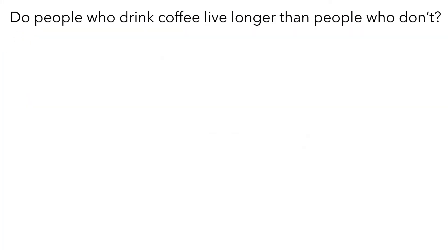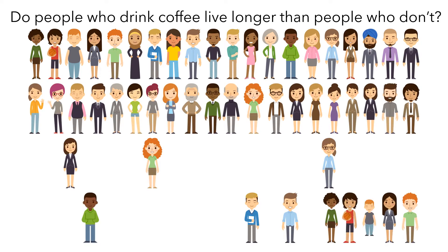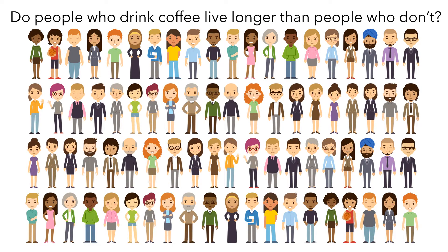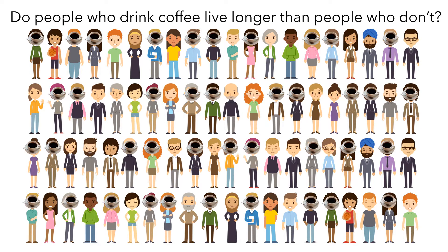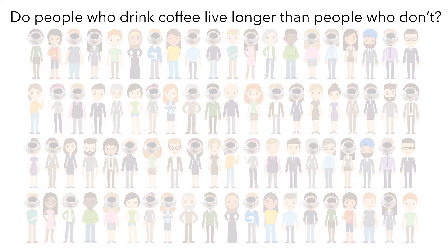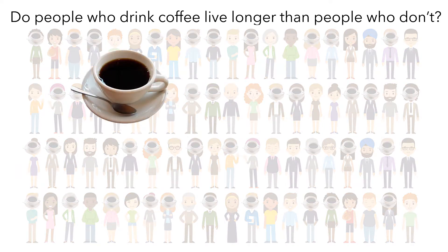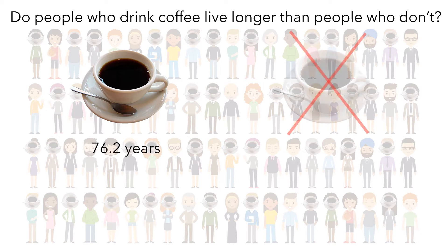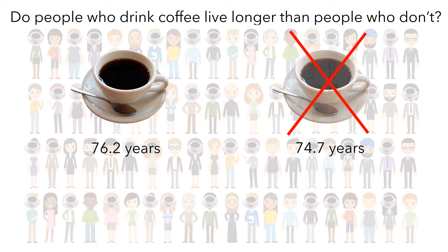Let's think about the first question. What we would do to answer this is get a lot of people to participate in the study, then find out which people regularly drink coffee and which people don't. Then we'd follow all of the participants for the rest of their lives and record their ages when they died and take the average for each group. Let's say that the people who drank coffee lived, on average, 76.2 years, and the non-coffee drinkers lived an average of 74.7 years. So the answer to our research question would be yes — people who drink coffee tend to live longer than people who don't.